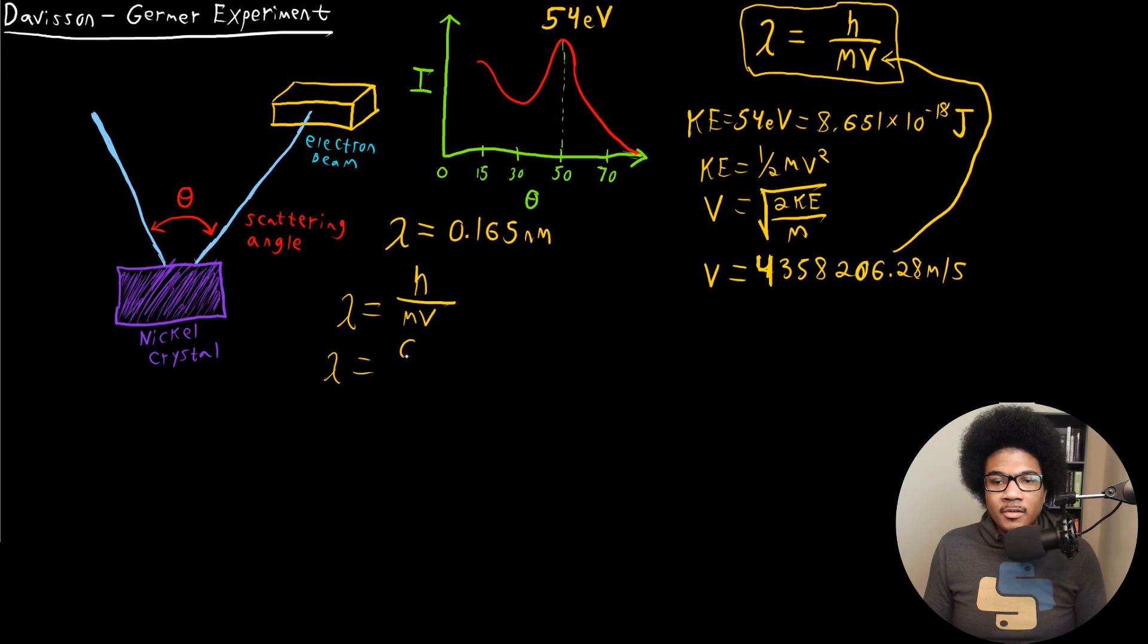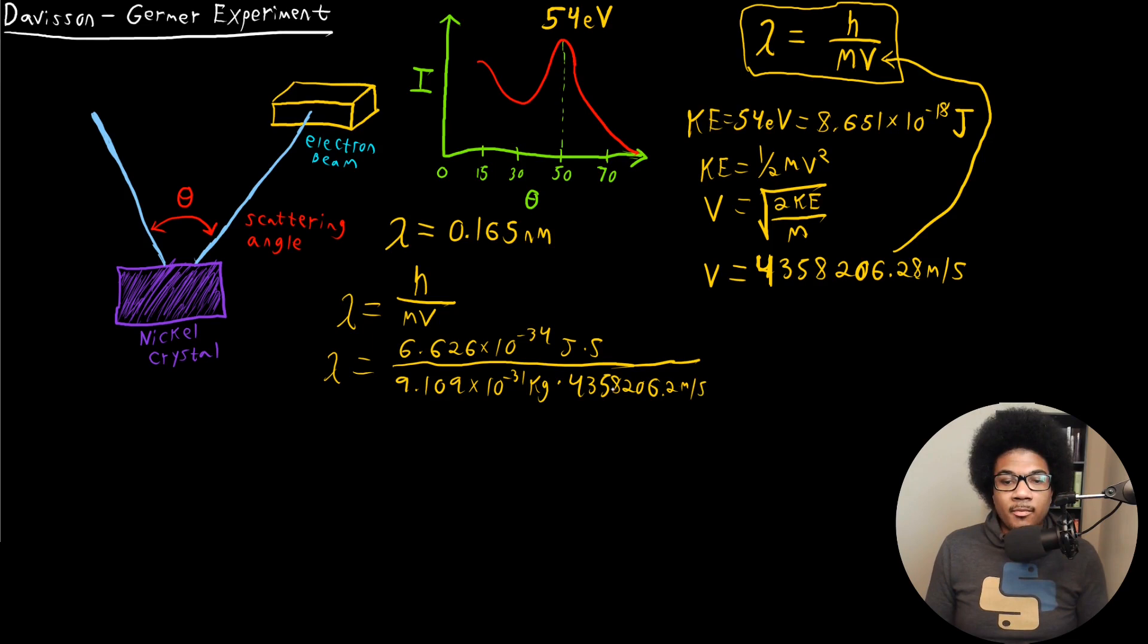times 10 to the negative 34 joules times seconds. Mass of an electron is 9.109 times 10 to the negative 31 kilograms. And then we just plug in our velocity here. And then from this calculation, we should get a wavelength. So when you do all the calculation, remember joules is kilograms meters squared per second squared.